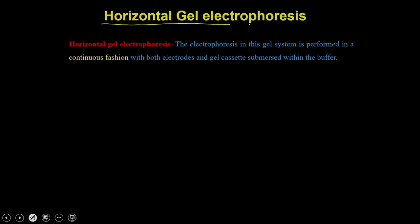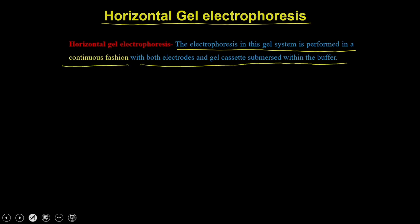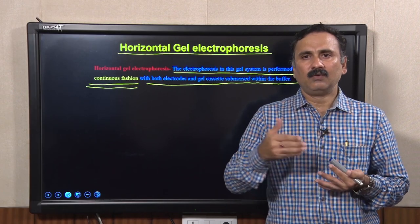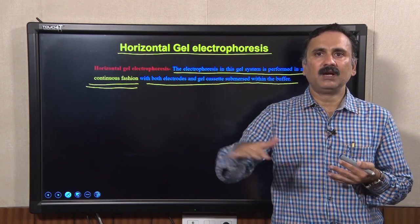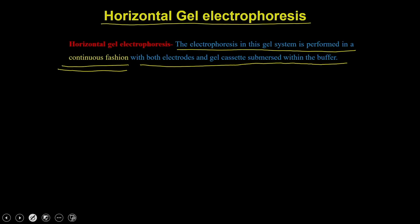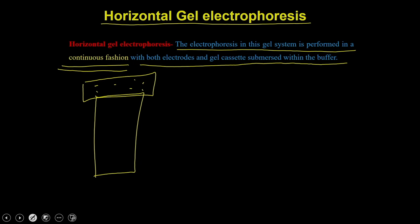In horizontal gel electrophoresis, the electrophoresis is performed in a continuous fashion where both electrodes and the gel cassette are submerged within the buffer. What is meant by continuous electrophoresis is that the current flows continuously through the system. In vertical gel electrophoresis, you have two chambers — the top chamber with the negative electrode and the lower chamber with the buffer.